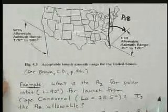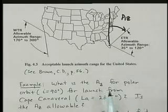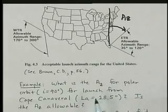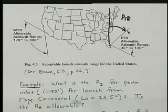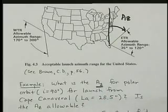Let's take an example. What is the allowable azimuth angle for a polar orbit where i equals ninety degrees for launch from Cape Canaveral? What is the value and is it allowable? Two questions here.